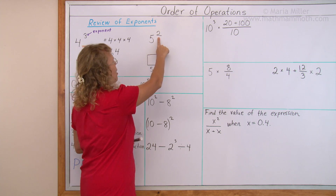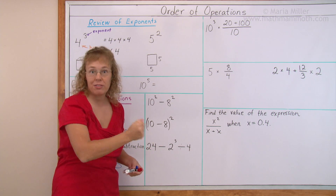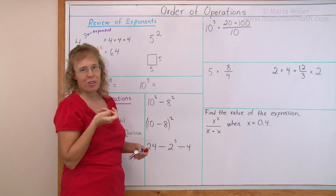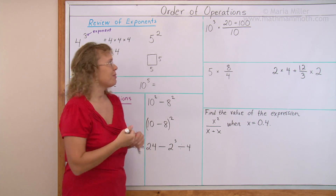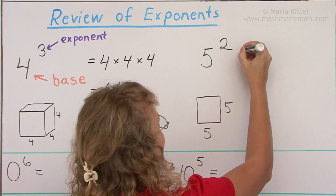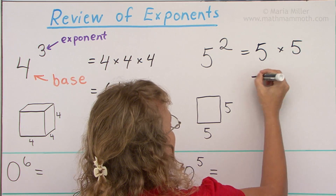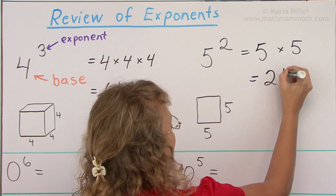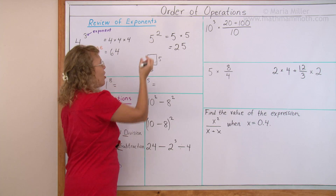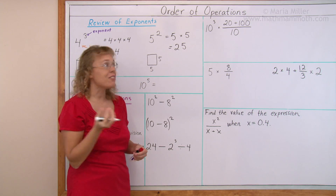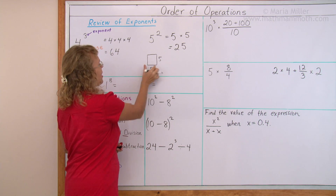5 to the second power means 5 times 5. It is also called — do you remember? — 5 squared. 5 times 5 equals 25. It is called 5 squared because it gives us the area of a square with side length 5.